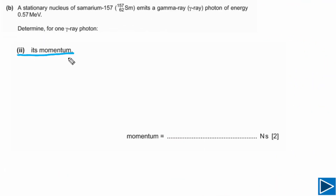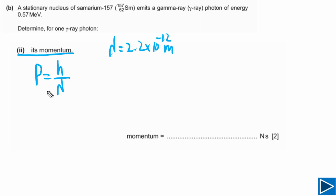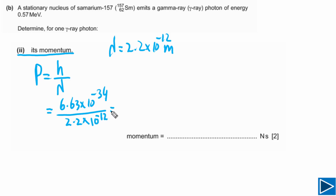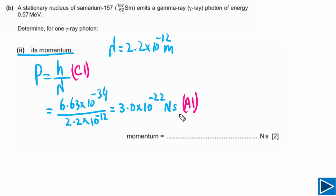For part B2, we calculate the momentum of the photon using p = h/λ. The wavelength calculated previously was λ = 2.2 × 10⁻¹² m. So p = 6.63 × 10⁻³⁴ / 2.2 × 10⁻¹² = 3.0 × 10⁻²² N s. This question also has two marks: one for writing the formula (C mark) and one for the correct answer.